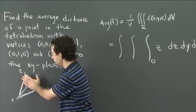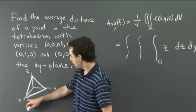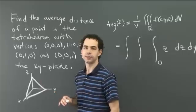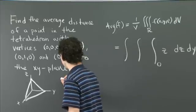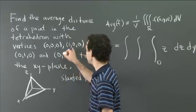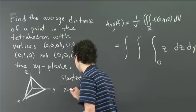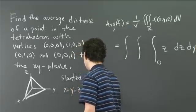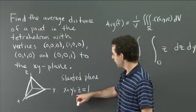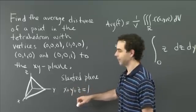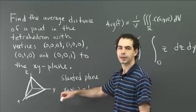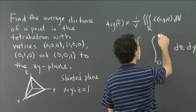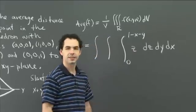The highest value that z takes is when it hits the top surface — the plane that passes through (1,0,0), (0,1,0), and (0,0,1). We need the equation of that plane. This slanted plane passing through the three vertices other than the origin is the plane x + y + z = 1. So we isolate z: the largest value z can take when x and y are fixed is 1 − x − y. That's the upper bound.